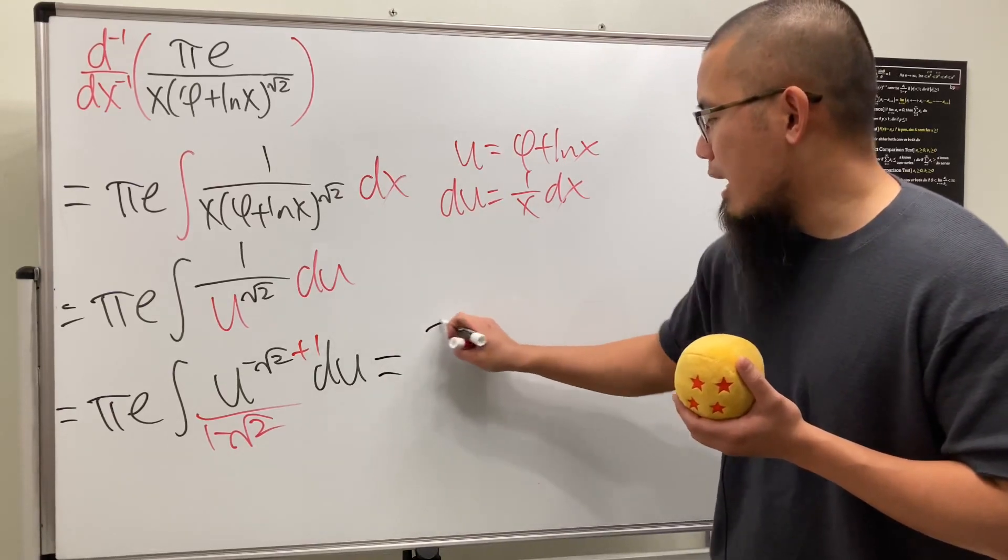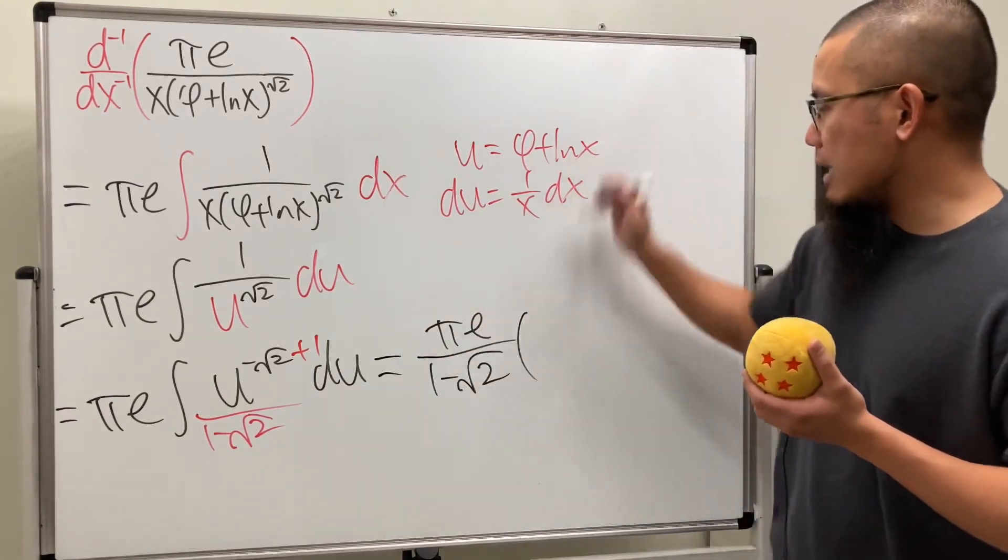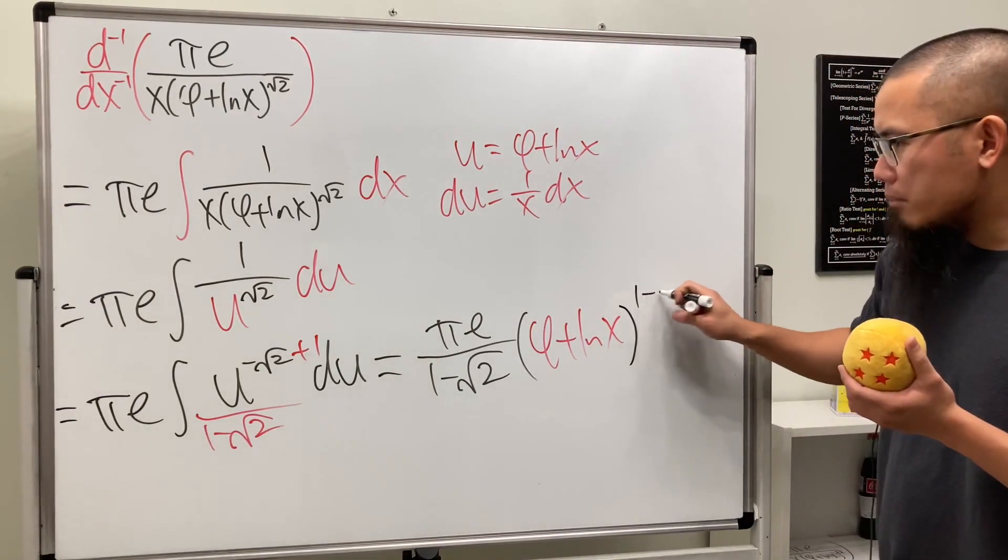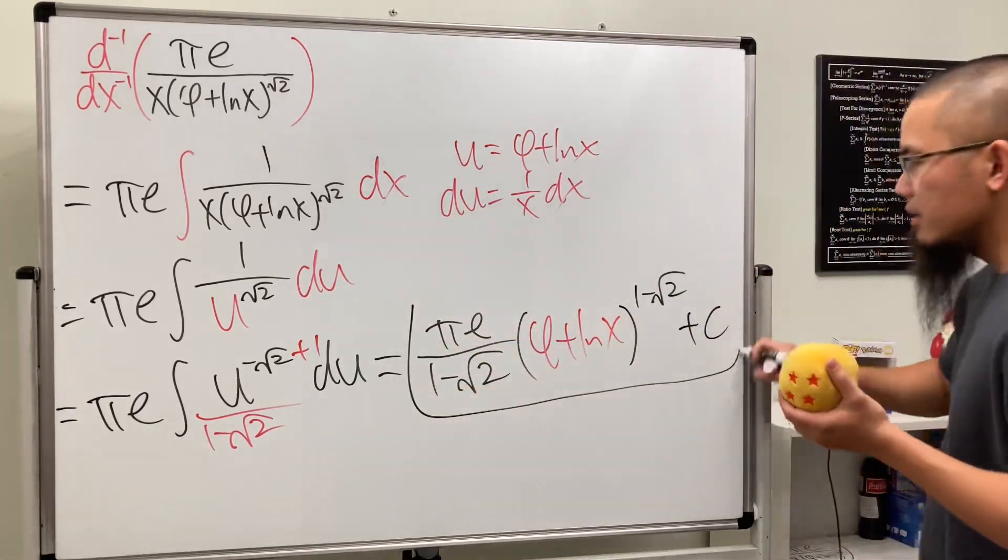So finally, we can see that we have pi e over 1 minus square root of 2 times u, which is that, which is phi plus ln x, and then raised to the 1 minus square root of 2 power. And of course, don't forget the plus c. And this is it.